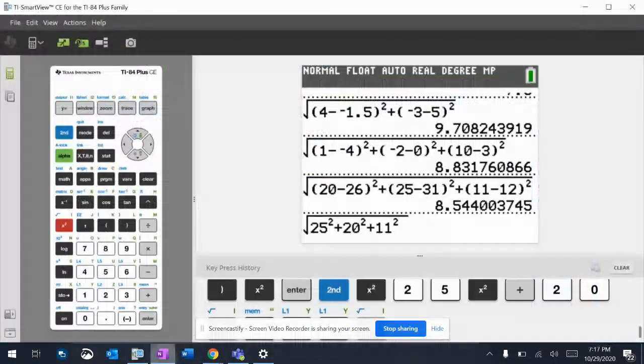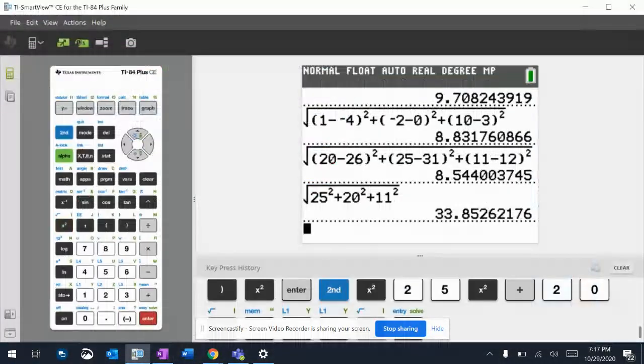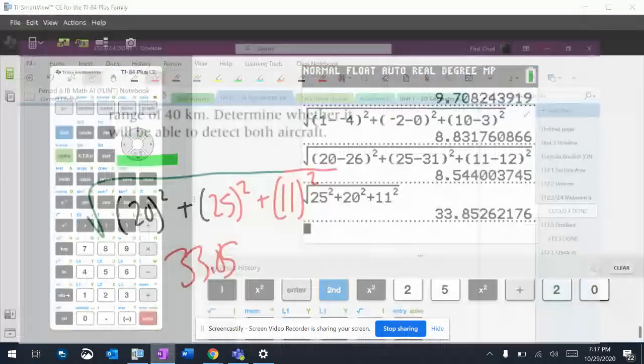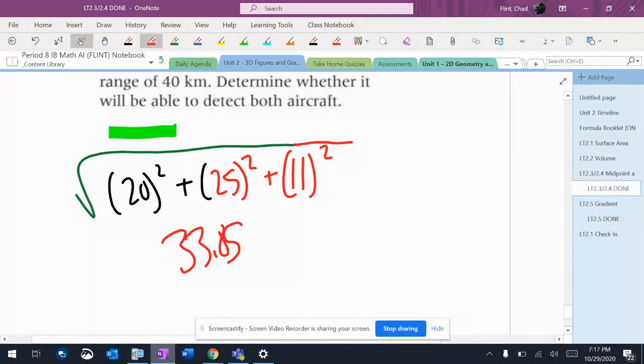So it's a 20, a 25, and an 11. So that's 33.85 for this one. 33.85. Did I round it correctly? Yes. So that one's okay, which means the other one's probably not okay.